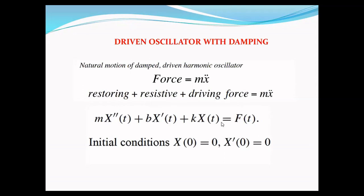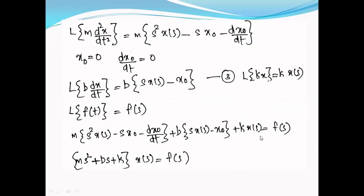We apply the same initial conditions: x(0) = x₀ and ẋ(0) = 0, where x₀ means the initial amplitude is 0. We perform the same operation as for the simple harmonic oscillator: take the Laplace transform, arrange to get X(s) on the left-hand side with all other terms on the right, then take the inverse Laplace transform.